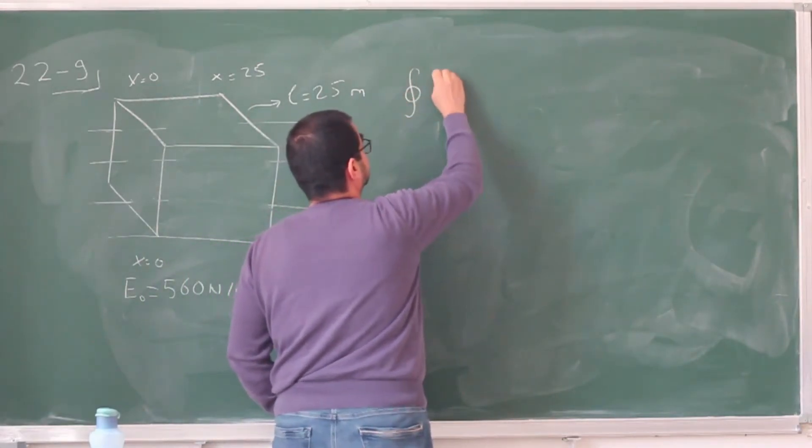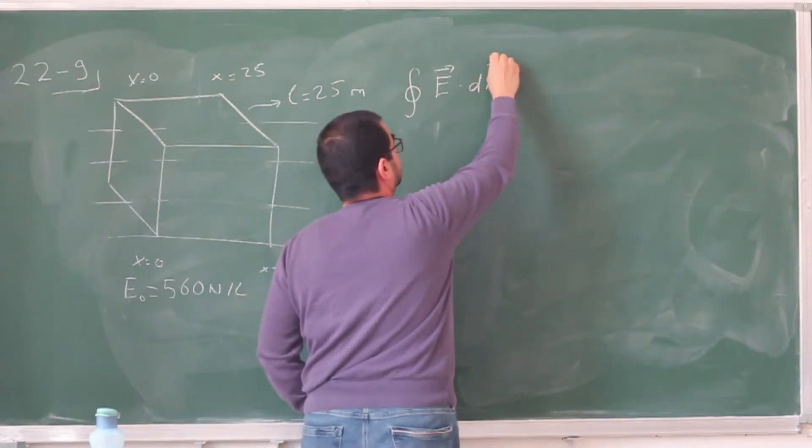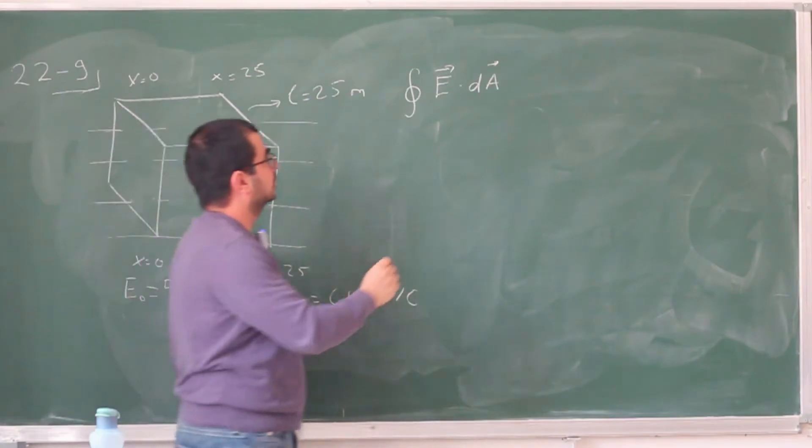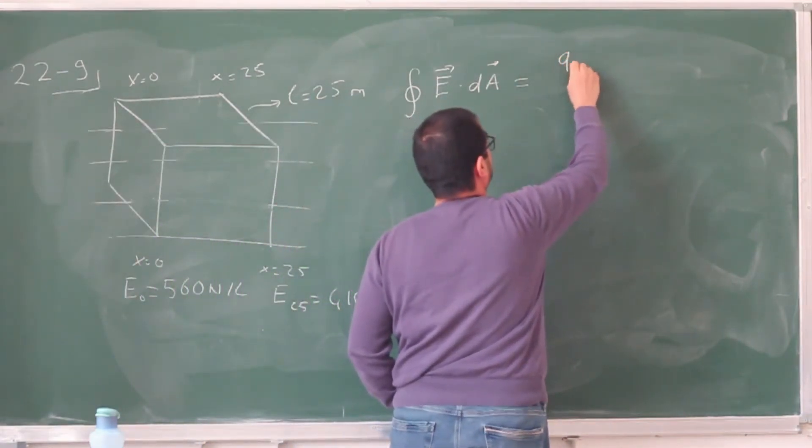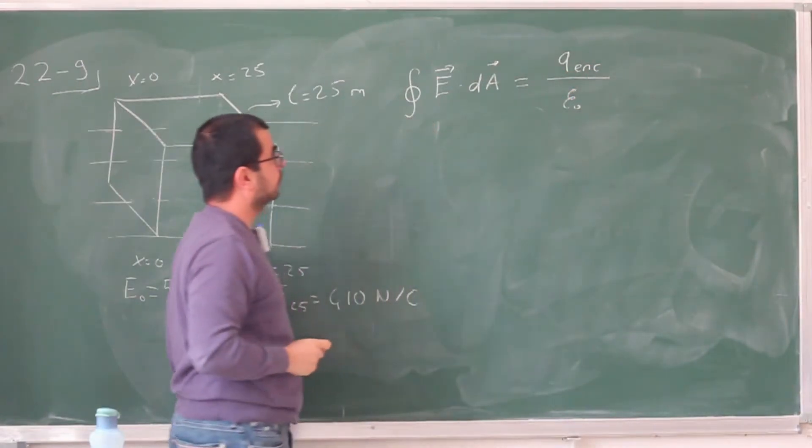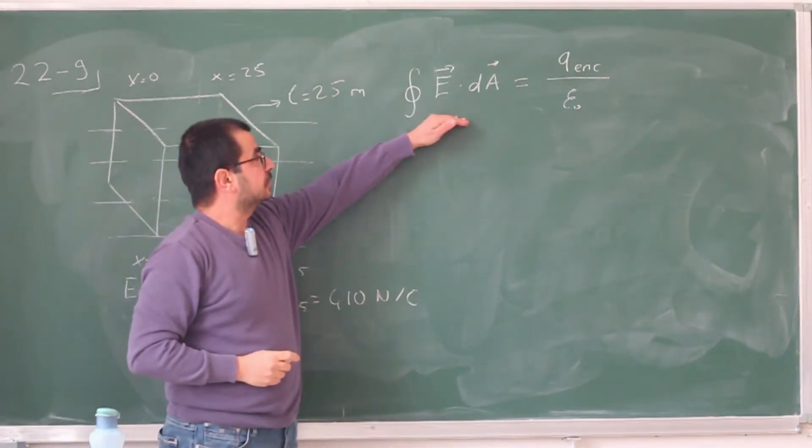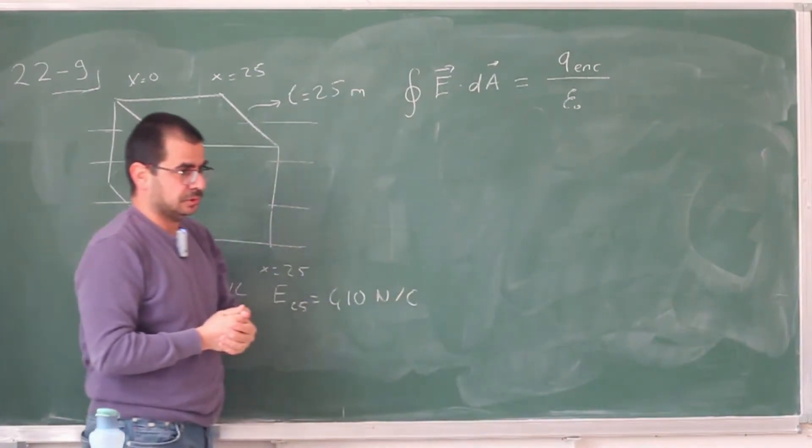For a closed surface, the dot product of the electric field or an infinitesimal surface area integrated over the closed surface is going to be the charge enclosed divided by epsilon 0. So if we can somehow calculate the left-hand side of this equation, this integral, we can find the enclosed charge for that surface.